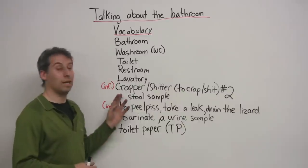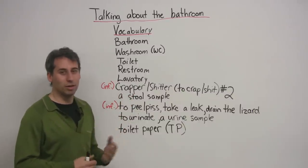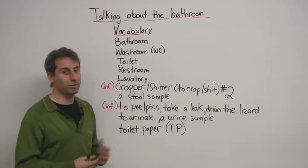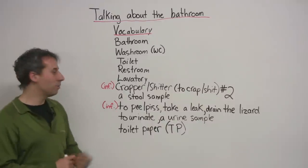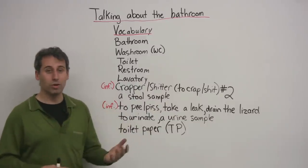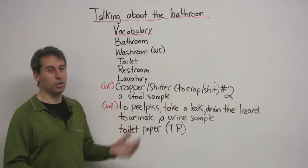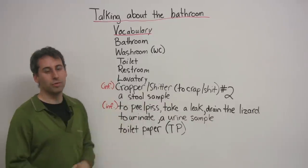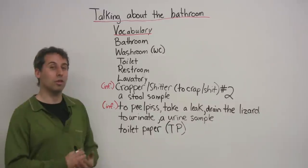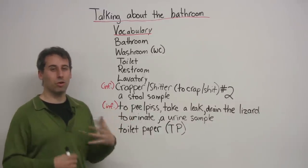Incidentally, 'crapper' — where did we get this word? Apparently, the flushing toilet as we know it was invented by a John Crapper. If you're in a restaurant or an office and you'd like to know where the facilities or washroom are, you could say, 'Excuse me, could you tell me where the toilet is?' or 'Could you tell me where the washroom is?'